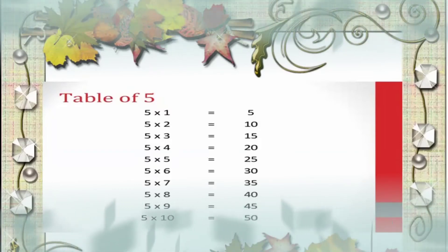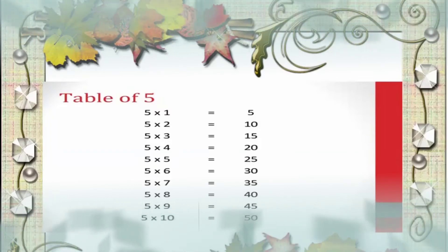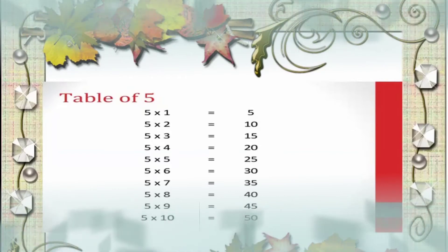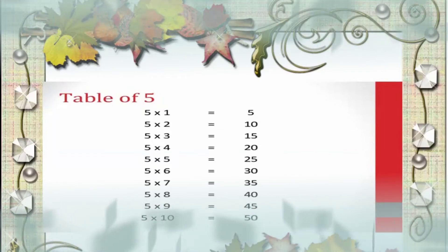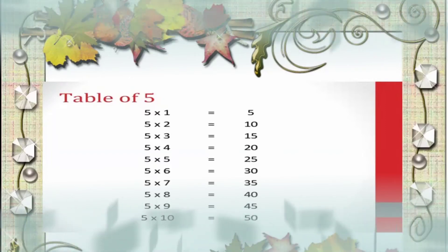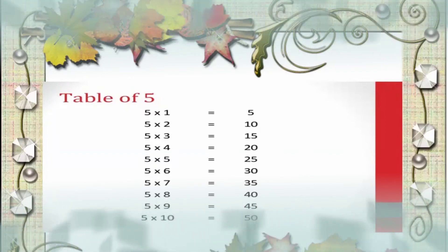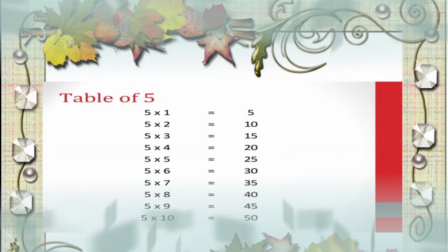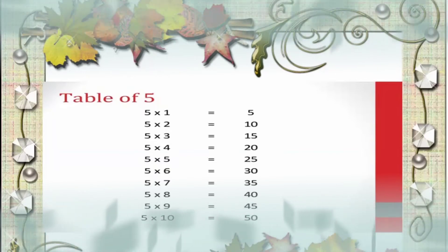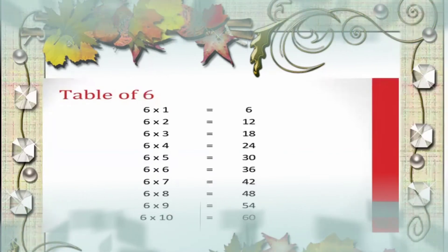Now the table of 5. 5 2's are 10, 5 3's are 15, 5 5's are 25, 5 6's are 30, 5 7's are 35, 5 8's are 40, 5 9's are 45, 5 10's are 50.